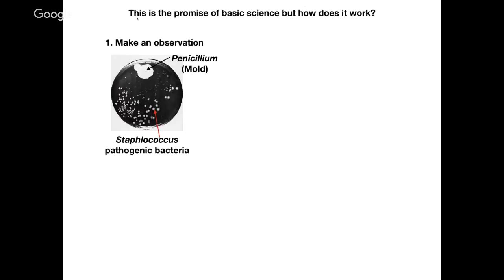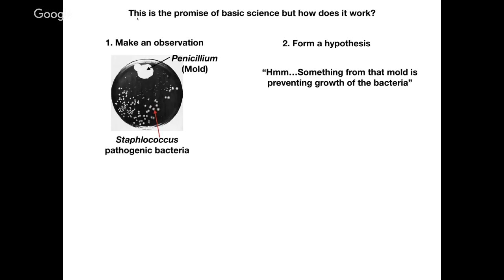So how do we do this? Well, we practice what's called the steps of the scientific process. The very first step is to make an observation. A really beautiful way to explain this is to go back to Alexander Fleming, who was a co-discoverer of penicillin. He went away on vacation, and when he came back to his lab, it was pretty messy. He took out his cultures of Staphylococcus — a pathogenic bacteria that causes disease — and found that wherever there was penicillin mold or bread mold, the colonies close to it were smaller or didn't grow as well. Based on that observation, he came up with a hypothesis: perhaps something from that mold is preventing the growth of that bacteria.